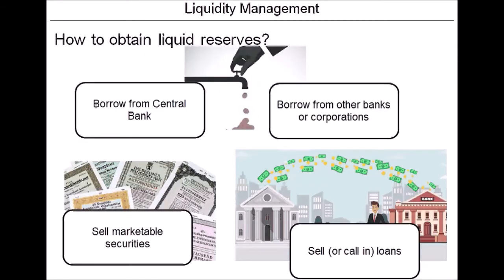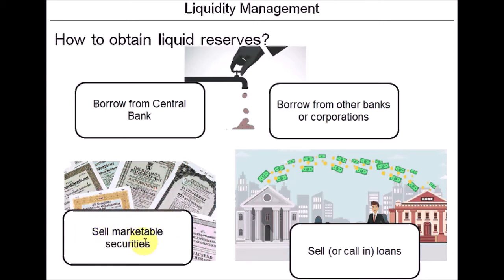The bank must quickly obtain liquid funds. It can do four things: borrow from the central bank (the Fed), which is easily done since 2008-2009 when central banks printed a lot of money and provided extremely cheap loans to commercial banks; borrow from other banks or corporations; sell some of its securities such as stocks or bonds to raise cash; or sell some of its loans to another bank and receive cash in return.